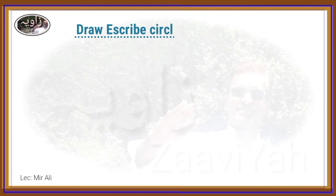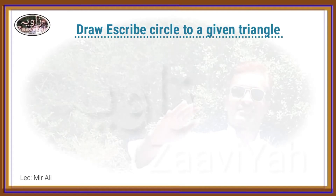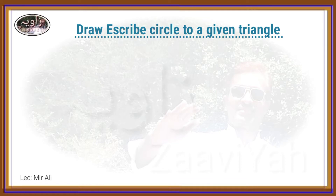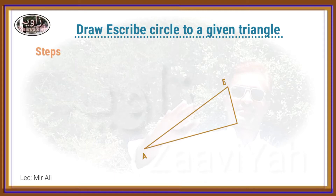Draw an inscribed circle to a given triangle. The circle is tied to the triangle and its sides are touched. Let's suppose the triangle is a triangle.